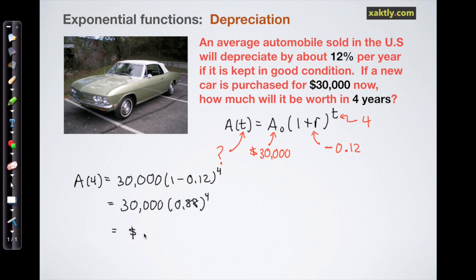And just using a calculator in the last step we get about $18,000. So that $30,000 car at the end of the four years is worth $18,000.